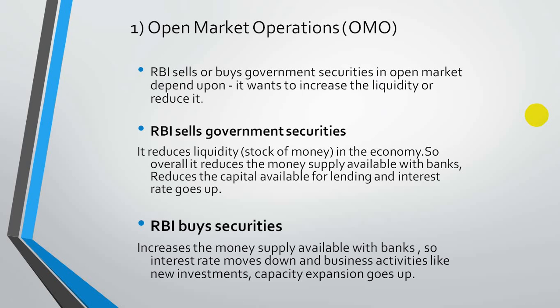When RBI buys securities, businessmen get loans at subsidized interest rates, leading to huge investments, large-scale production, more employment, and ultimately economic growth. The government bonds are sold or bought through checks drawn on banks and made in favour of the central bank, so money gets transferred from the buyer's account to the central bank's account, reducing deposits and reserves of commercial banks.